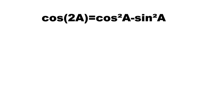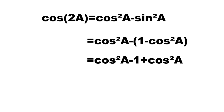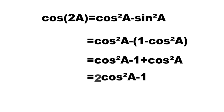We can simplify this further using the Pythagorean theorem. For the sine version, cosine(2a) = cos²a - (1 - cos²a), which equals cos²a - 1 + cos²a. Combining like terms, cosine(2a) = 2cos²a - 1, as the final identity.